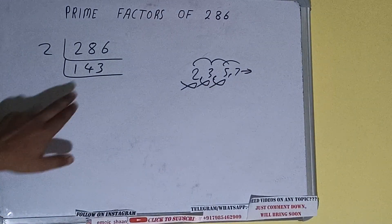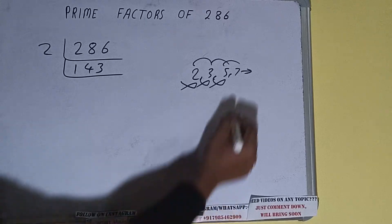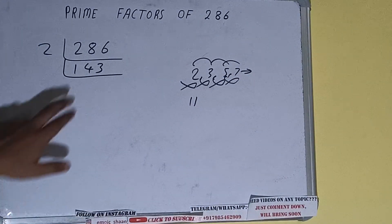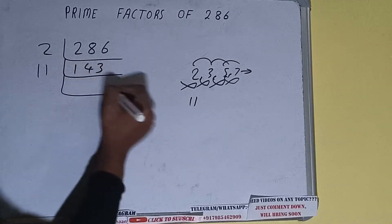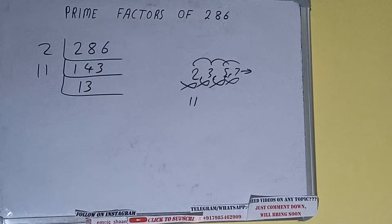check with 7. 7 twos are 14... 3 left with 7 is also not divisible. Let's check with 11. 11 once is 11... 33 with 11, it is divisible, and we'll be having 13. 13 is further not divisible by